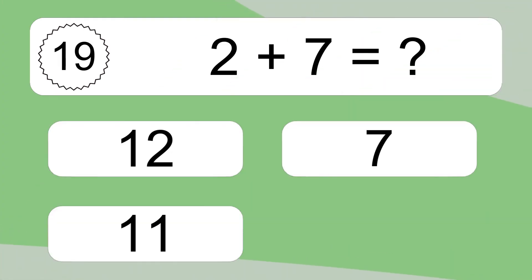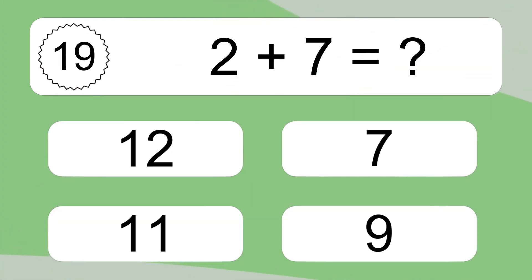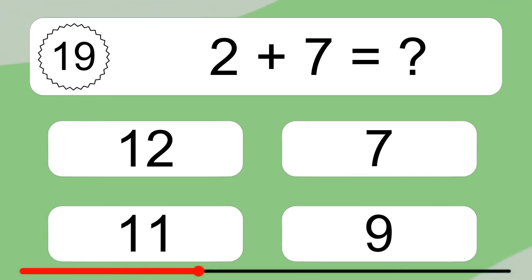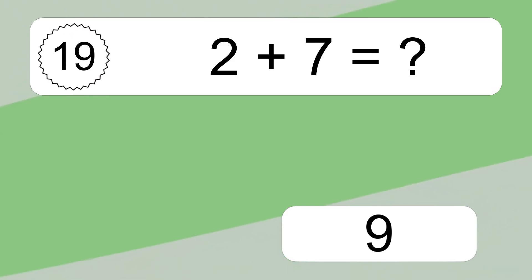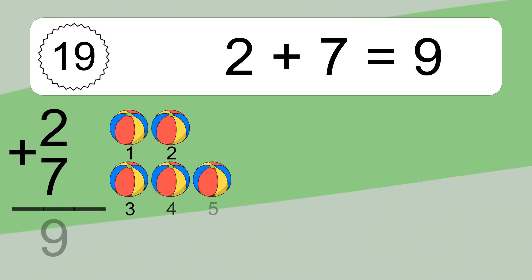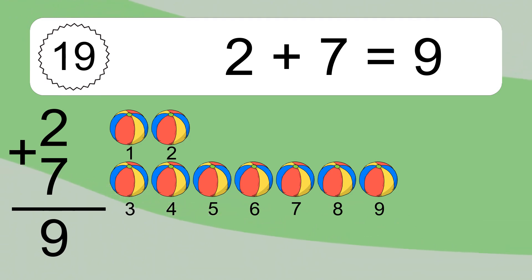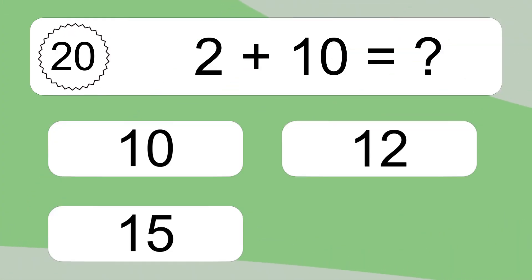2 plus 7 equals what? 2 plus 7 equals 9. Let's count it: 1, 2, 3, 4, 5, 6, 7, 8, 9.